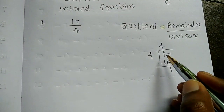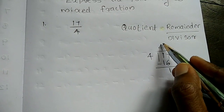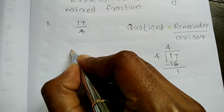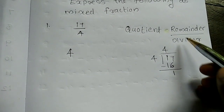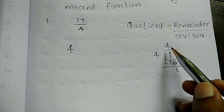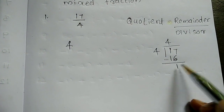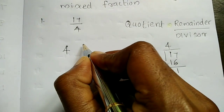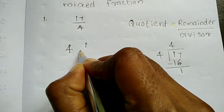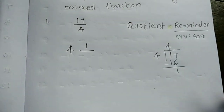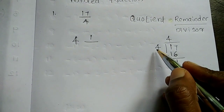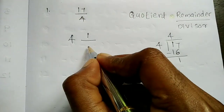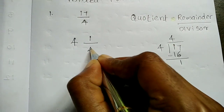So we apply the formula: quotient is 4, then the remainder is 1, then the divisor is 4. So we write the mixed fraction as 4 and 1/4.